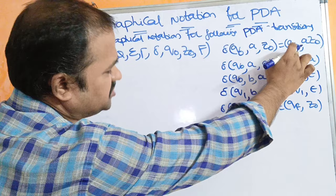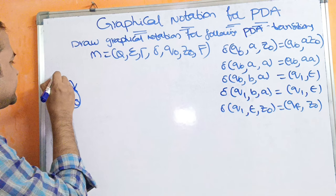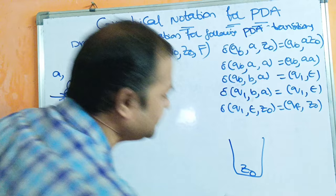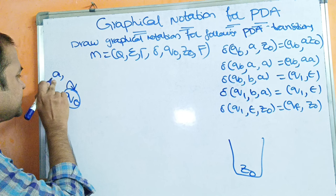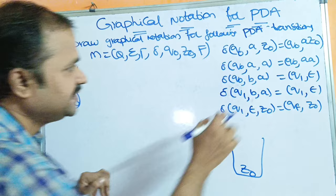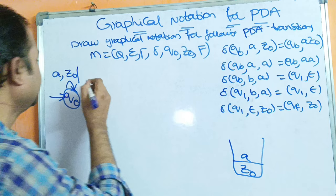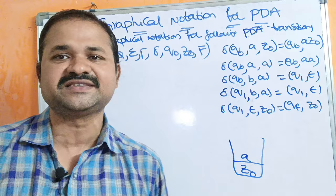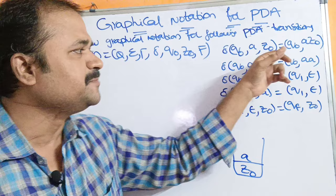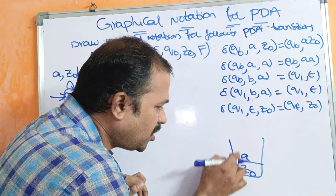If the input symbol is A and the topmost symbol present in the stack is Z0, then Z0 will be replaced by A Z0. So if the input symbol is A and the stack is empty, we simply perform a push operation. Z0 is replaced by A Z0, and now the stack contains A Z0.